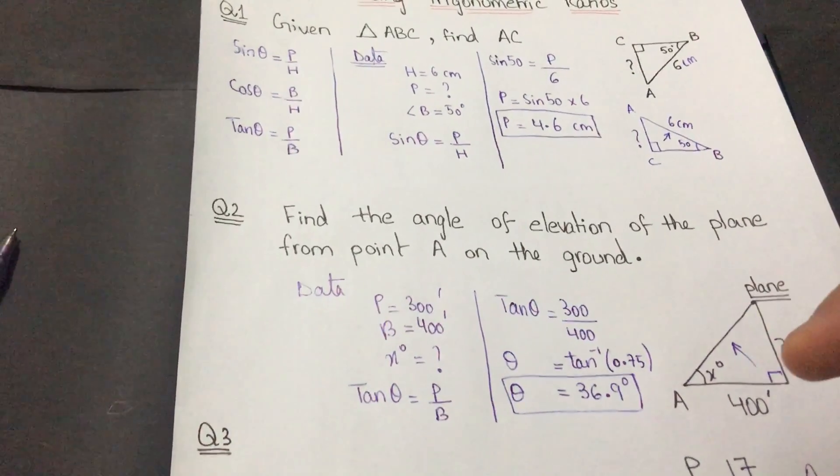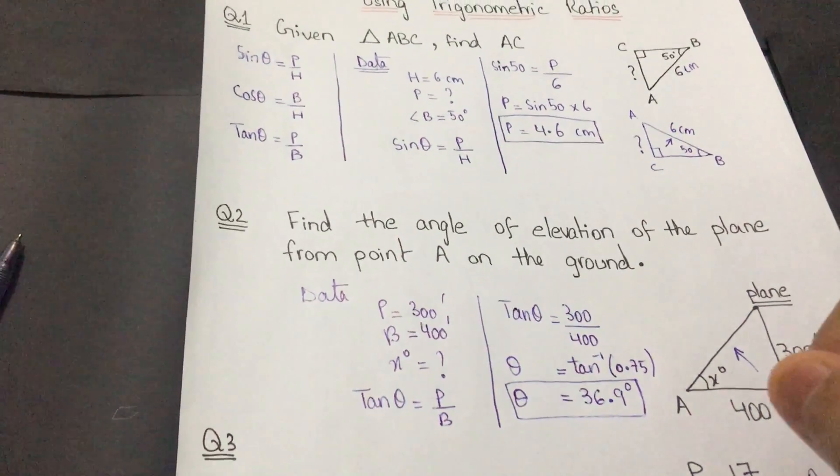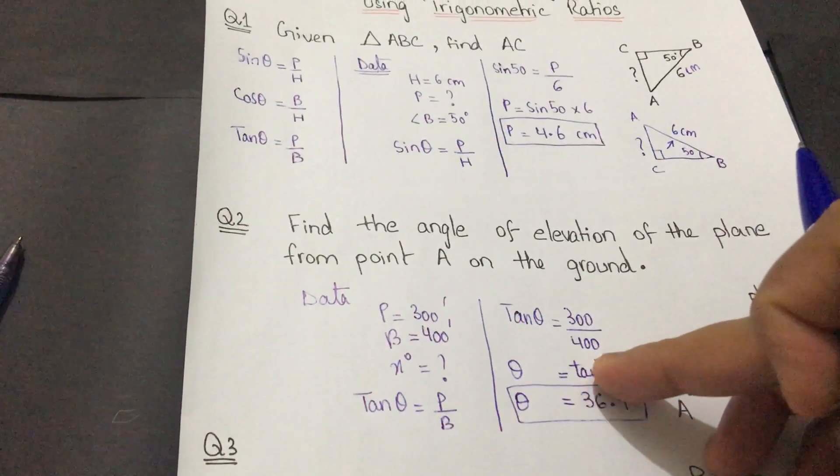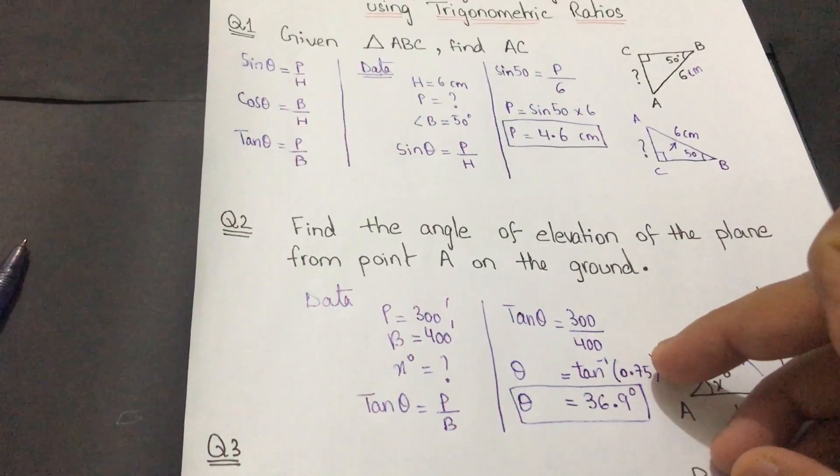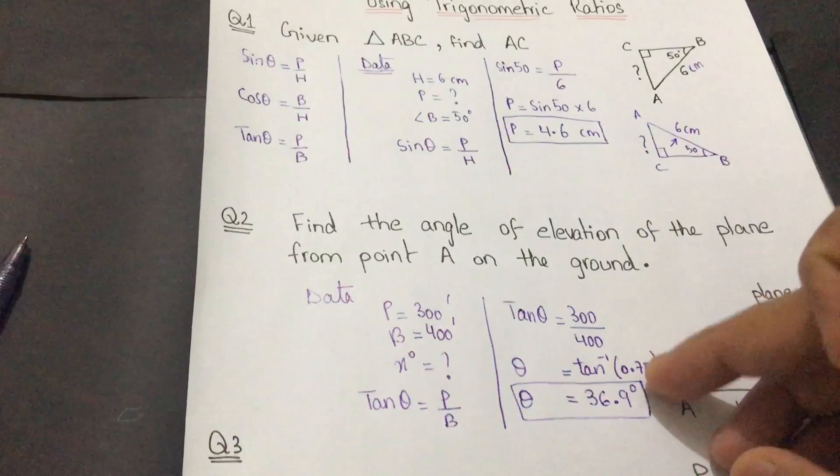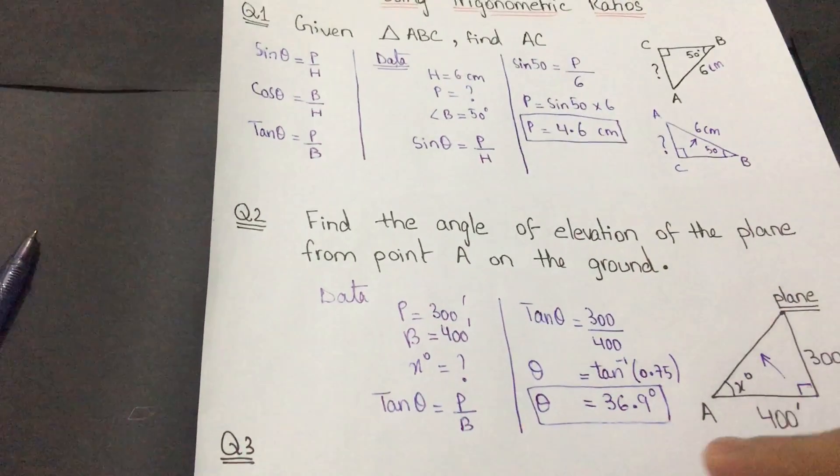You have to press shift and then tan. It will automatically give you tan inverse, and then you have to put this value in the brackets: 0.75. On pressing equals to, you will get your required angle.